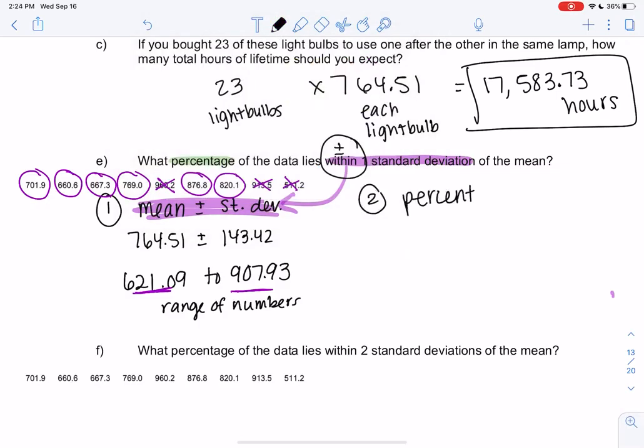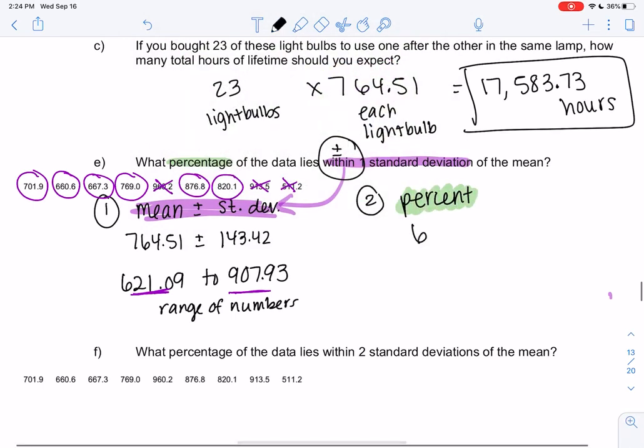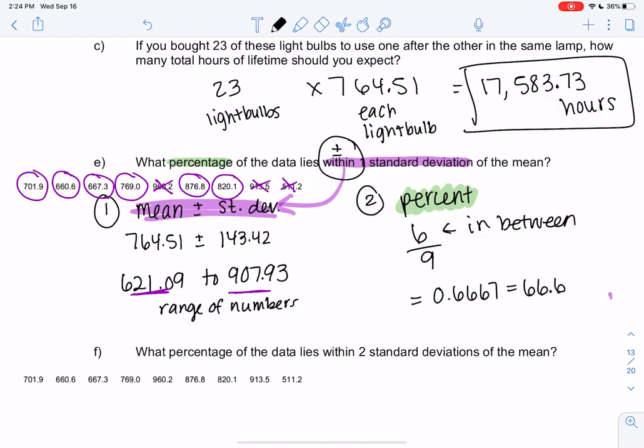So basically to find the percent, that's the second part of the question. Six of them are between the numbers, and there were nine total numbers. So 6 divided by 9 should get you 0.6667, which is 66.67%.